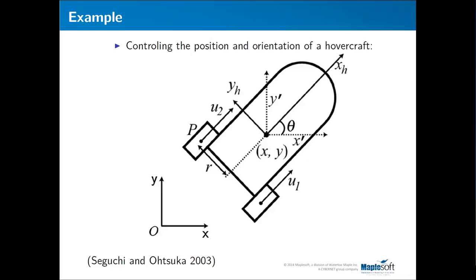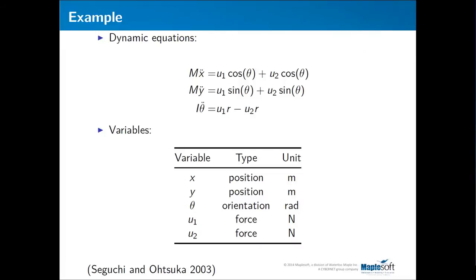In the worksheet I will show you, you will see an MPC controller generated for controlling the position and orientation of a hovercraft. This is the model of the hovercraft: we will control position x and y and orientation theta using the forces U1 and U2 generated by the thrusters. This example is taken from a paper by Seguchi and Otsuka. The dynamic equations of the hovercraft are shown with the variables and their units — this is what we will enter into the worksheet to describe our system.